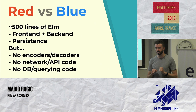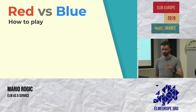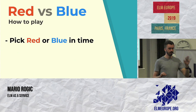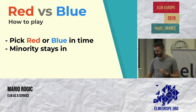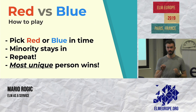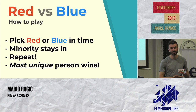Let's dive in. The URL is split.lambdara.app. Here's how the game works. The game is called Red vs. Blue — very simple. You pick red or you pick blue in time, and the time will be me counting down. The minority stays in — the majority group gets kicked out. Then we repeat, and eventually the most unique person at Elm Europe will win. The award will be this French Kinder Surprise.